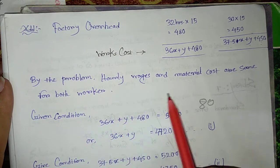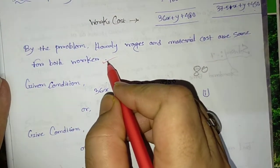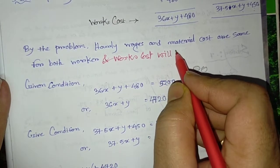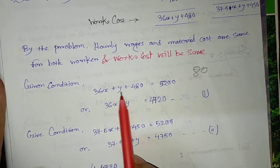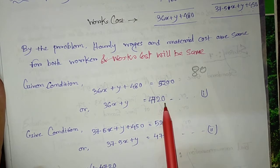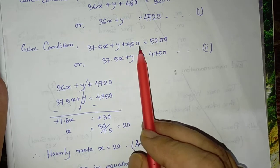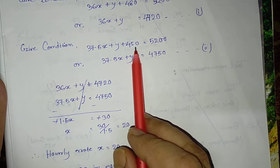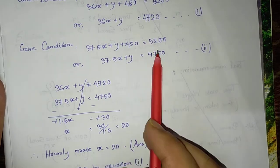By the problem, hourly wage and material cost are same for both workers and works cost will be same. In case of first worker Pradeep, works cost is y equals to 5200. Changing sides, 36x plus y plus 480 equals 5200. Transferring 480 to the other side by subtracting, it will be equation 1: 36x plus y equals 4720. And in case of Aurindam, works cost was 37.5x plus y plus 450 equals 5200. Changing sides and subtracting, 37.5x plus y equals 4750. This is your works cost in both the cases as equation 2.